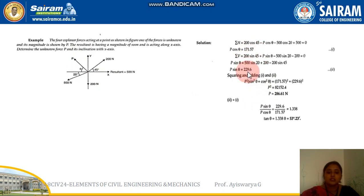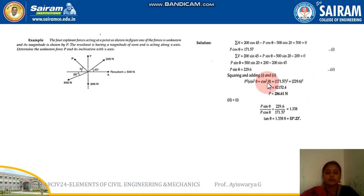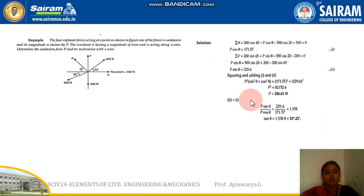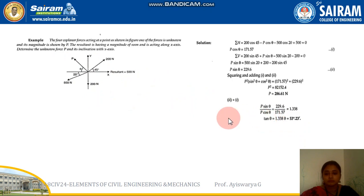You will obtain two equations: P cosθ equals some value and P sinθ equals some value. Now square and add both equations — P²(sin²θ + cos²θ) equals the sum of the squared values. Since sin²θ + cos²θ = 1, you get P equal to a specific value. Then divide the two equations to get tanθ, so θ = tan⁻¹ of the ratio. This is how you find both the unknown force P and its angle.